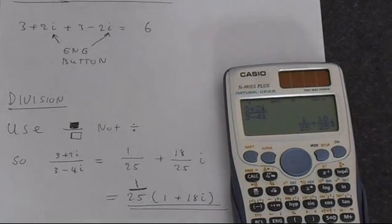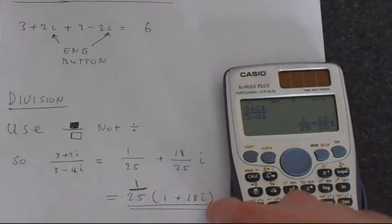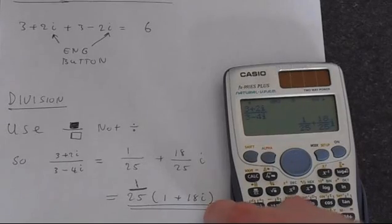However, you might as well do a little bit of thinking and realize that there is a common factor of 1 over 25, and take that out. So you get this answer, which is a more correct way of writing it.